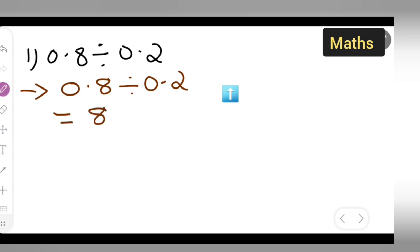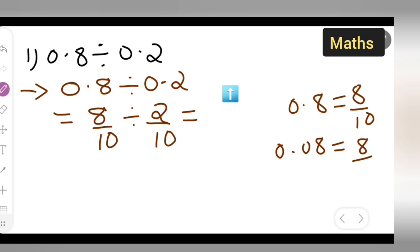You can write down 8 upon 10 divide by 2 upon 10, because here 0.8 is given, so you can write it as 8 upon 10. If it is 0.08, you would have written 8 upon 100.